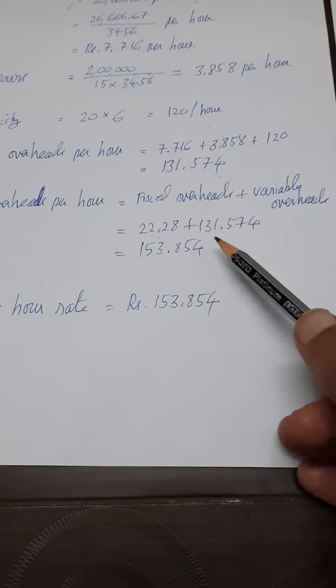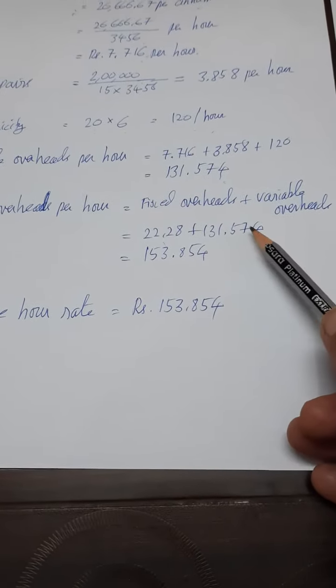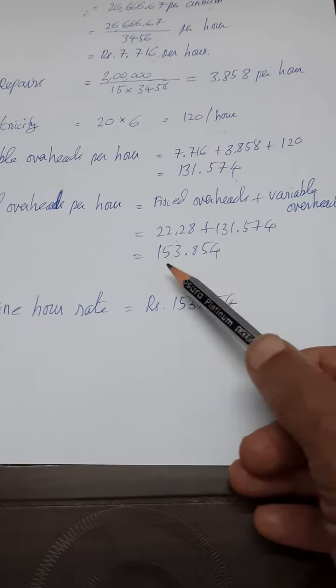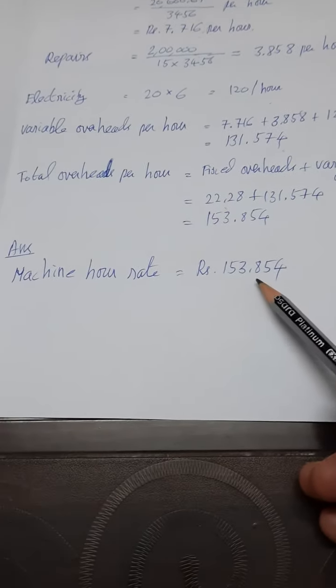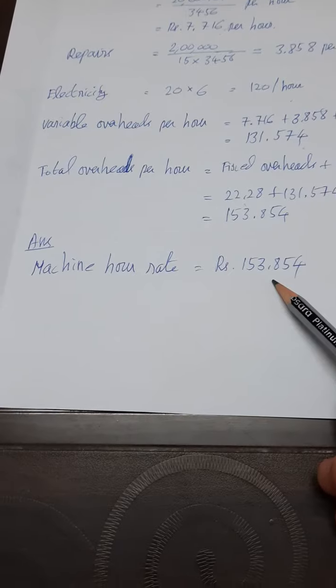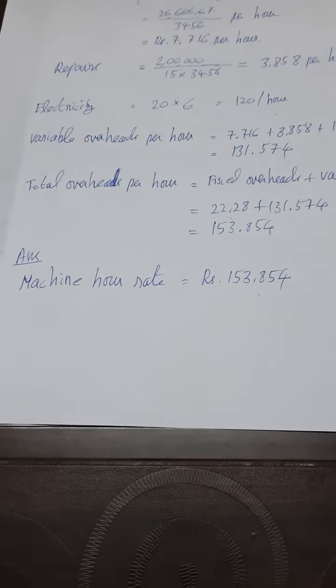We have found out the variable overhead as 131.574. When you add both you are getting 153.854 as the machine hour rate for this particular machine tool.